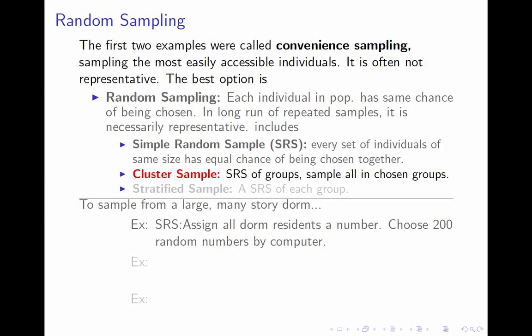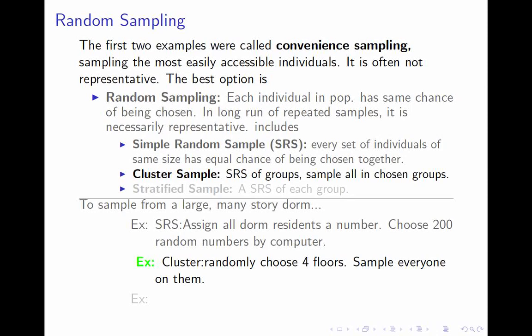One thing you can do to make your life easier is a cluster sample. You break your population into groups, usually based on some geographic criteria of who's close to each other, and then pick a simple random sample of those groups and sample everything in the group. In the dorm, I might randomly select four floors and sample everyone on those four floors. That way I'm not going up and down the stairs all the time. A cluster sample saves effort and travel time.